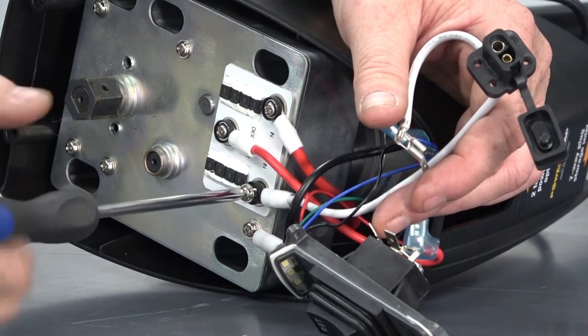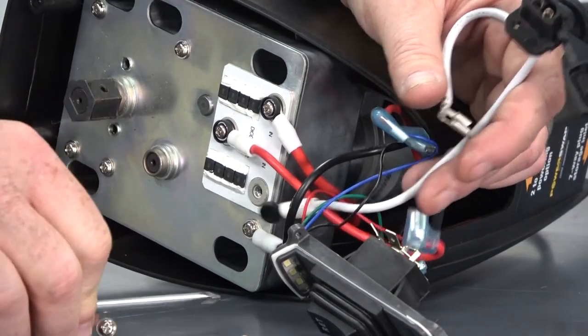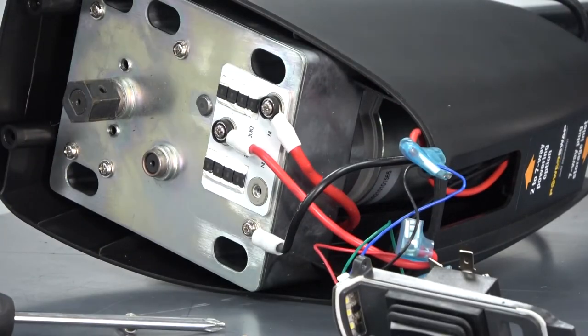Using a Phillips head screwdriver, disconnect the two-way port from the jack motor bus connector. The bezel can now be completely uninstalled from the PowerStance tongue jack.